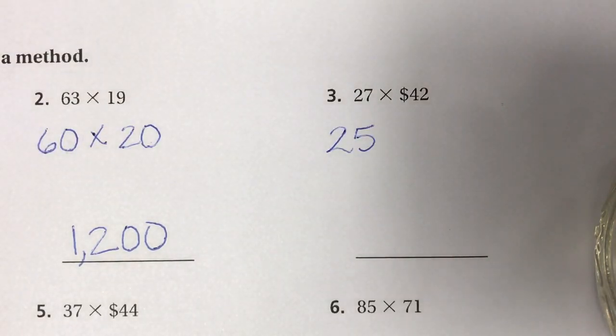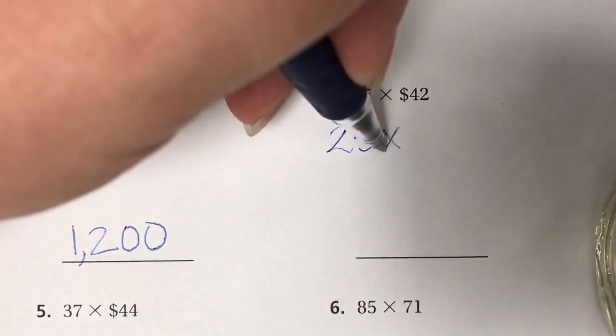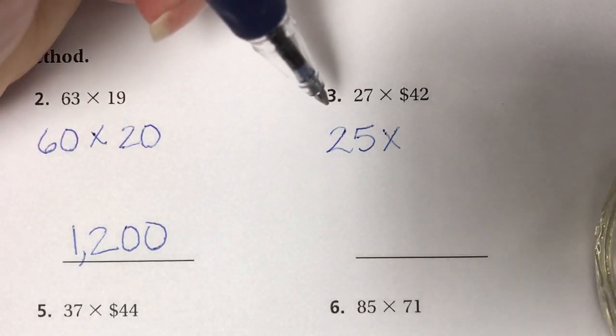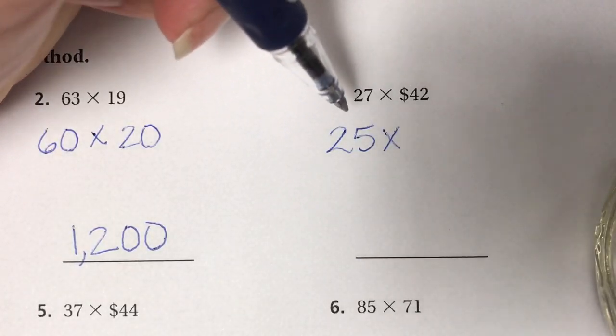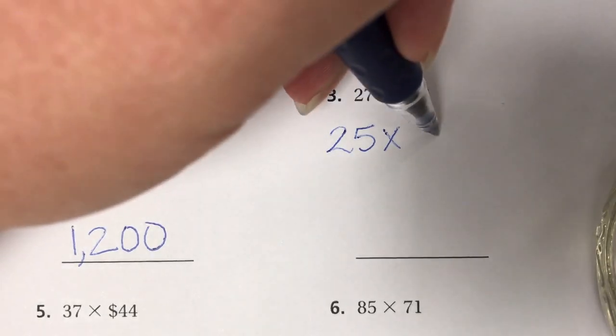25 is actually closer to 27 than rounding it to 30 would be, so we're going to get a more accurate answer. If I look at my other factor, I don't really see a compatible number, so I'm just going to round that one to 40.